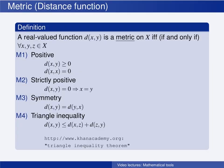A metric gives us a measure of the distance between two elements in a set. The definition states that a real-valued function d of x and y is a metric on the set X if — and 'iff,' with two f's, is often used in definitions meaning 'if and only if' — for all elements x, y, and z in the set X, it satisfies the following four conditions. I will call the function d the distance function to add some intuition to the definition.